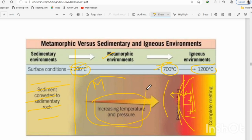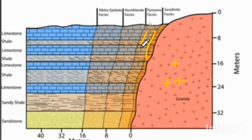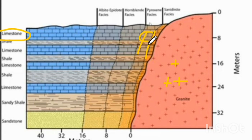You can better understand this with a diagram. Here, granite (magma) is shown, and rocks nearer to it definitely get metamorphosed because the temperature is very high. For example, if there is limestone, the rock nearer to the intrusion will get changed into marble.